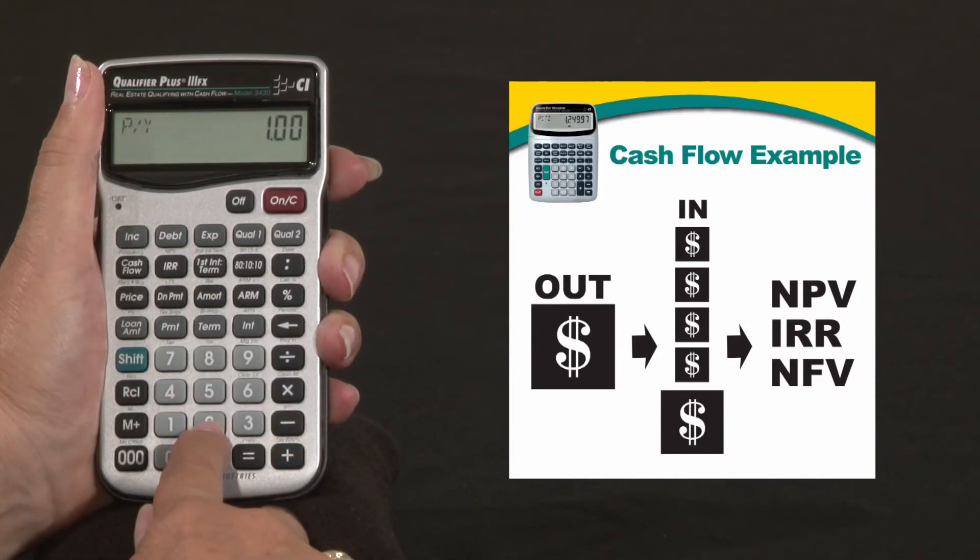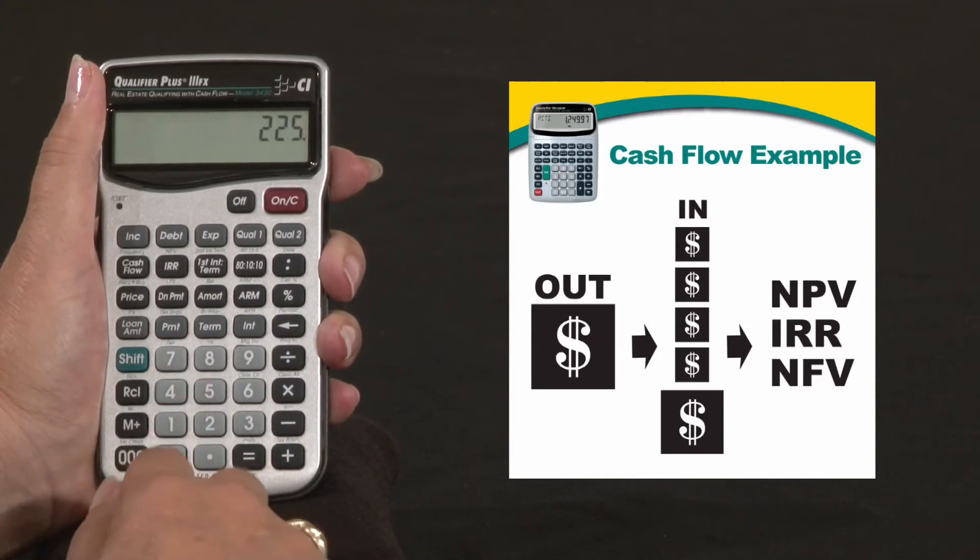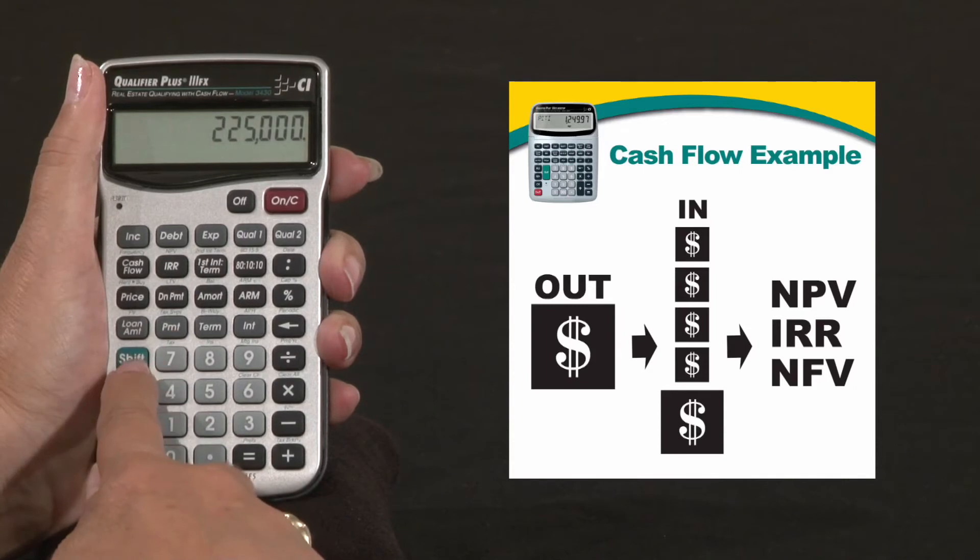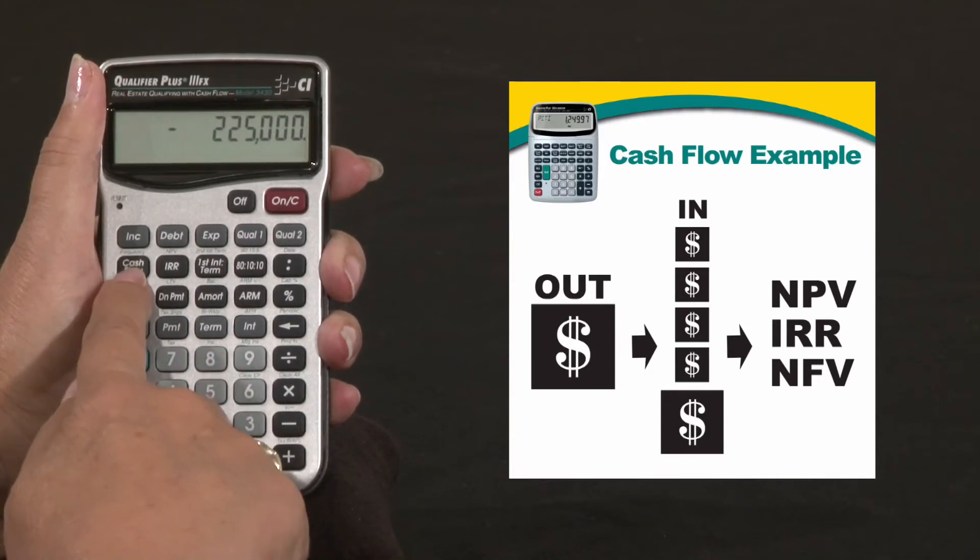Now we're going to enter his initial outlay as a negative because this is cash going out. So Shift minus cash flow.